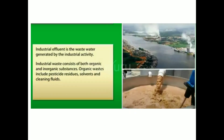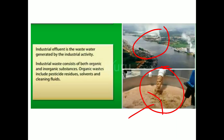Here are a few examples of effluent water which is released from various industries. We can say that effluent water, or industrial effluent, is the water which is generated by industrial activity. We can specifically call it as industrial effluent. This industrial waste consists of both organic and inorganic substances. Organic waste may include pesticides, residues, or solvents and cleaning fluids.